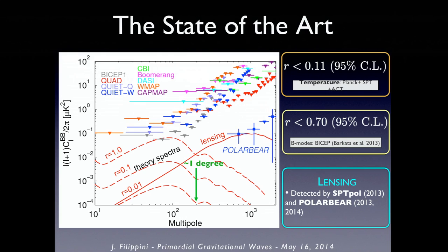The state of the art two months ago was that we had first detections of the BB auto spectrum from POLARBEAR and a detection in cross-correlation by SPTPol, just starting to be seen. Upper limits from all other instruments at degree angular scales showed the leading upper limit was from the BICEP instrument, the predecessor of BICEP-2. This is noise-limited — you can build a better instrument and do better.